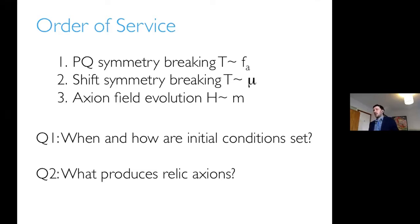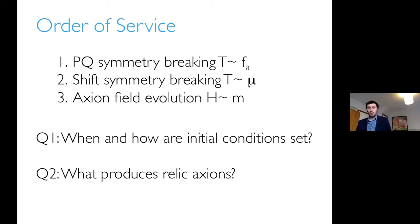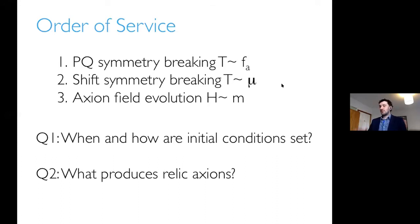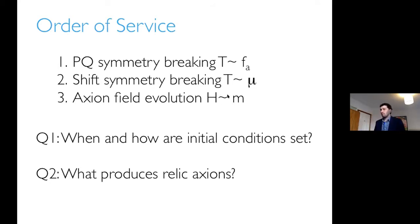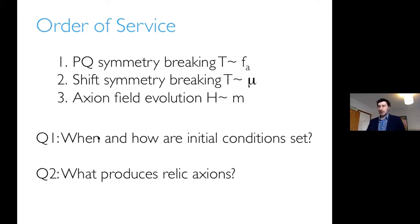We have Peccei-Quinn symmetry breaking, which occurs when the temperature of the universe drops below the symmetry breaking scale. We have shift symmetry breaking when instanton effects turn on, which is around the QCD scale for the QCD axion, but for an axion-like particle is around some scale mu. Then we have axion field evolution when the Hubble constant drops to around the mass. The first question is when and how are initial conditions set, and the second is what produces relic axions.